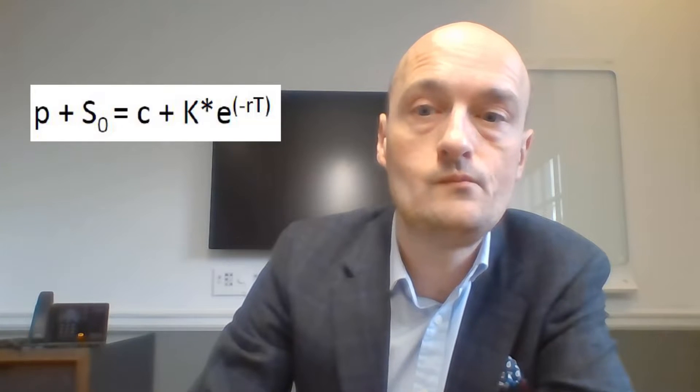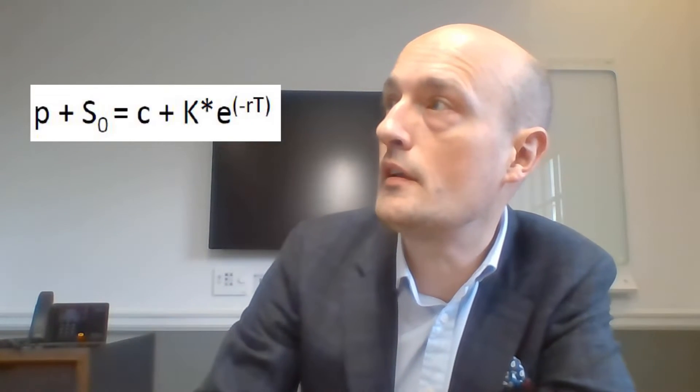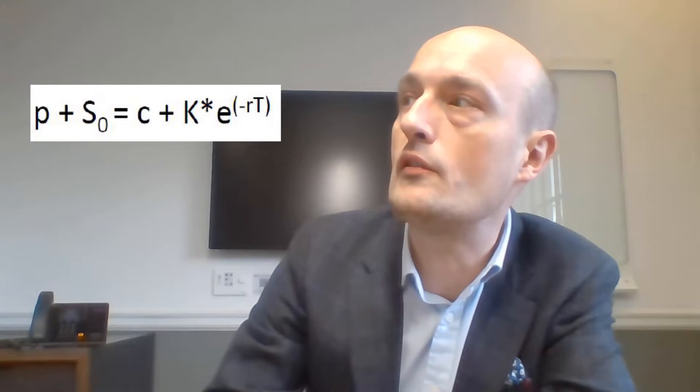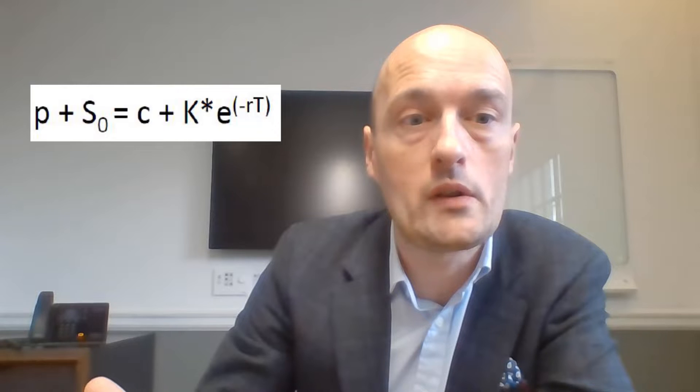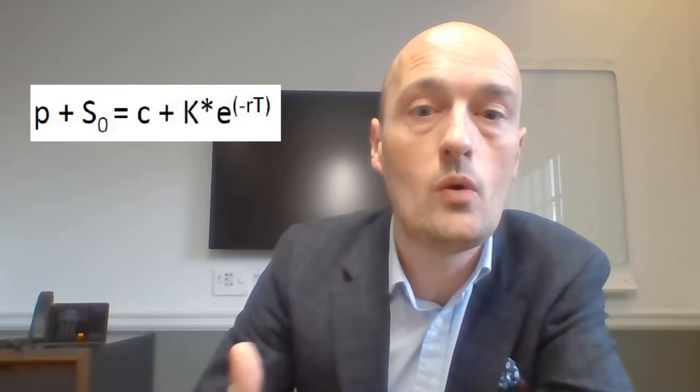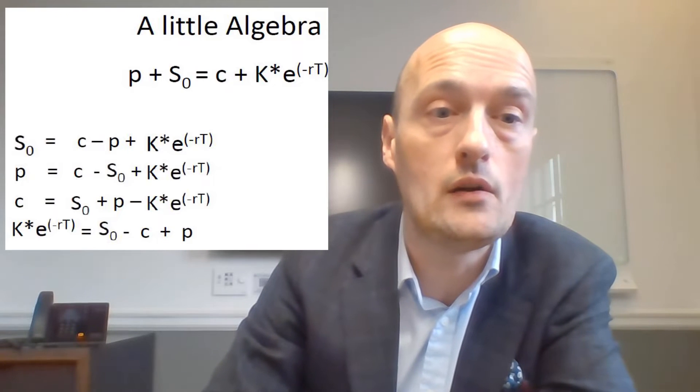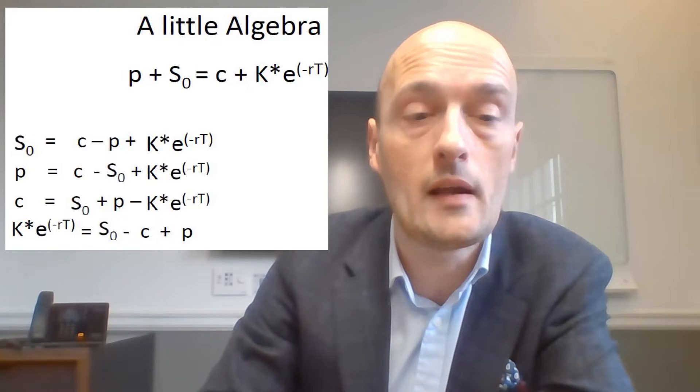Our formula is: Put plus Spot equals Call plus the present value of the strike. We can play around with that formula — if we know the prices of the puts and calls, the strike price, the expiration, and the interest rate, we can back out the price of the underlying. Or if we know the price of one option, we can back out the price of the other, or even the interest rate. With a little algebra, it turns into an array of different formulas giving the same information.